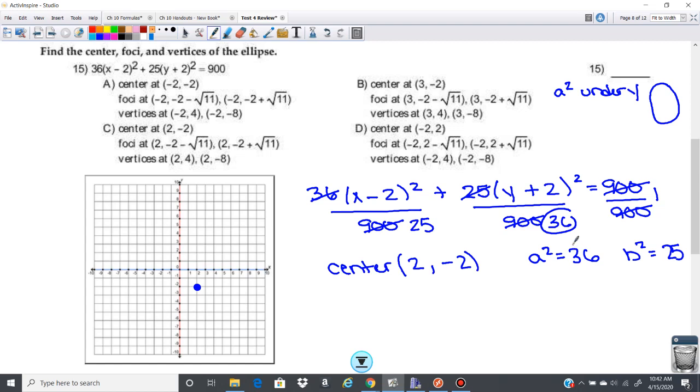Next thing we need to find are the foci and the vertices. So let's find a and b. So a squared is 36, which means a is going to be plus or minus 6. So that's going to give you the major axis vertices, so the long axis. So this point here and this point here. So let's go ahead and find those.